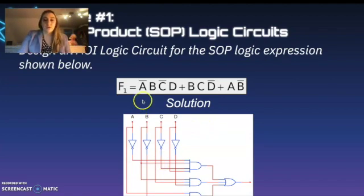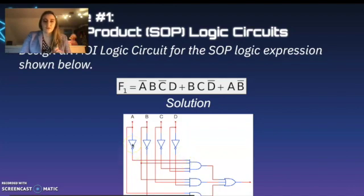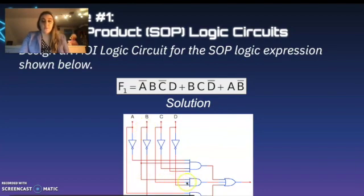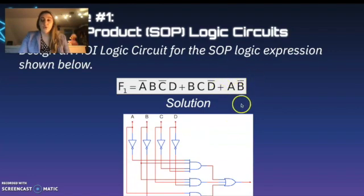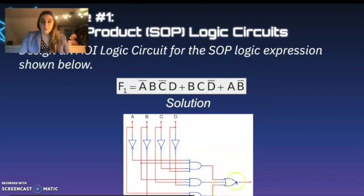We can then start cascading our gates. Our first minterm has four inputs, so we use a four-input AND gate and connect those together: A-naught, B, C-naught, and D. Our second minterm has three inputs, so we use a three-input AND gate connected to B, C, and D-naught. Our last minterm only has two — A and B-naught — so we use a two-input AND gate. Because we have three final minterms, we use a three-input OR gate, which results in our final output.